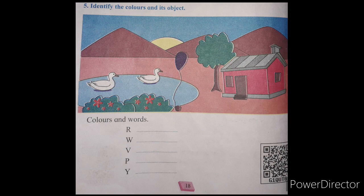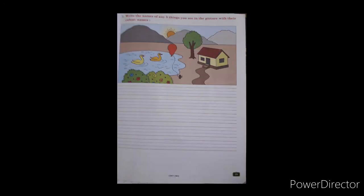So the answers are: red flowers, white ducks, violet balloon, pink cat, yellow sun. Fill your workbook pages 27, 28, and 29. Page 29 has a question where you write five things you see in the picture and write their color names. The textbook page 18 question number 5 is the same, so you can copy it into your workbook.